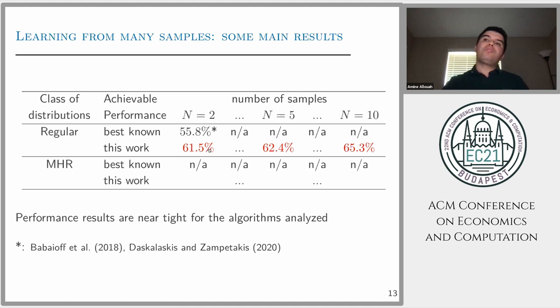As a matter of fact, this mechanism dominates the ERM mechanism. Moreover, we show the first achievable performance for any number of samples and we can achieve up to 65.3%. For the MHR class of distribution no known result was known before.